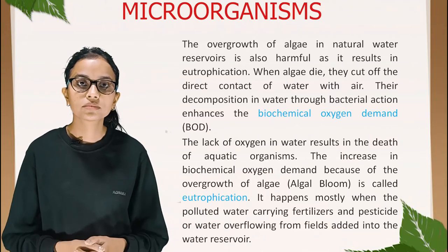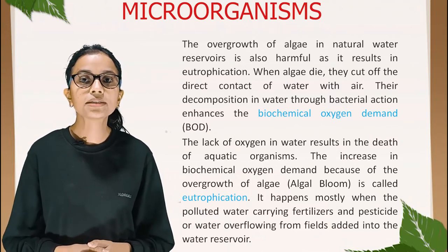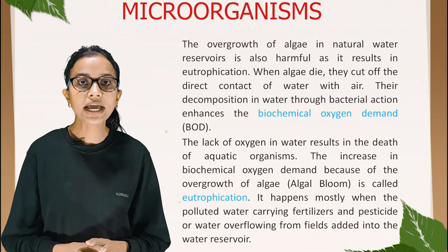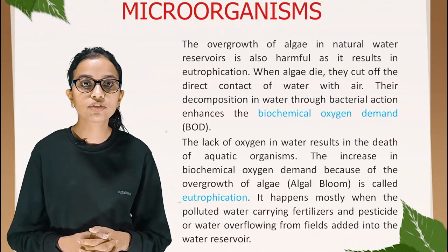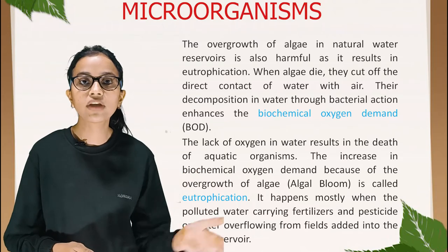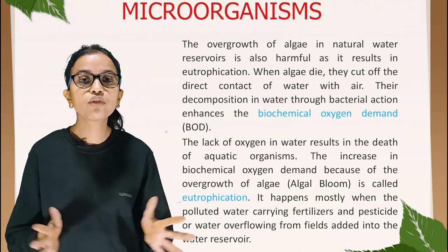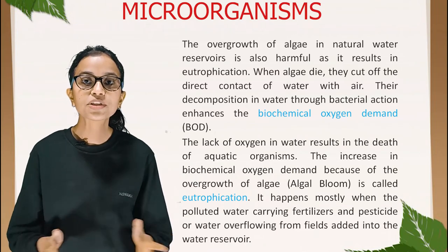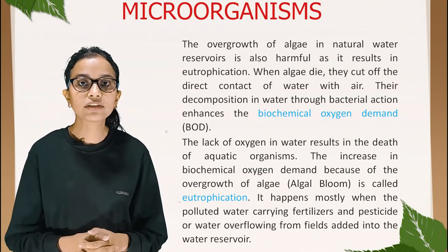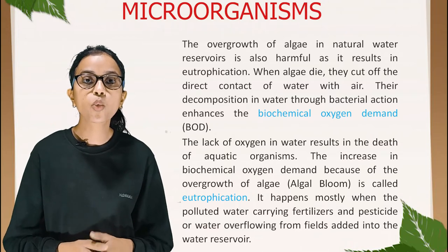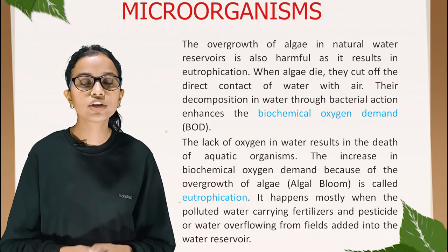The lack of oxygen in water results in the death of aquatic organisms. The increase in biochemical oxygen demand because of the overgrowth of algae — called algal bloom — is called eutrophication. It happens mostly when polluted water carrying fertilizers and pesticides, or water overflowing from fields, is added into a water reservoir.